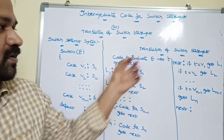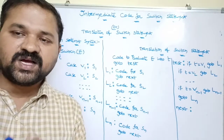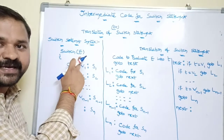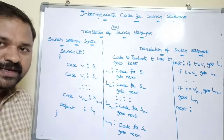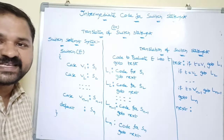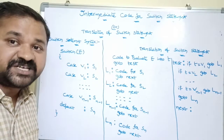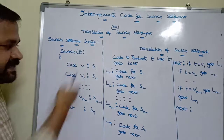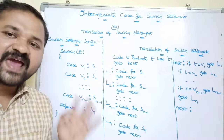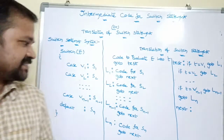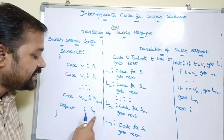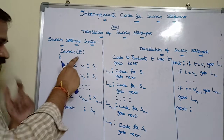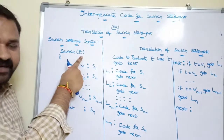This is the syntax for the switch statement. Here, 'e' stands for expression — it may be either an integer expression or a character expression. After evaluating this expression, it produces an integer or character value. v1, v2, ..., vn-1 are the case values, which may be integer values or character constants. s1, s2, ..., sn-1, sn are the statement blocks, each containing a set of statements.